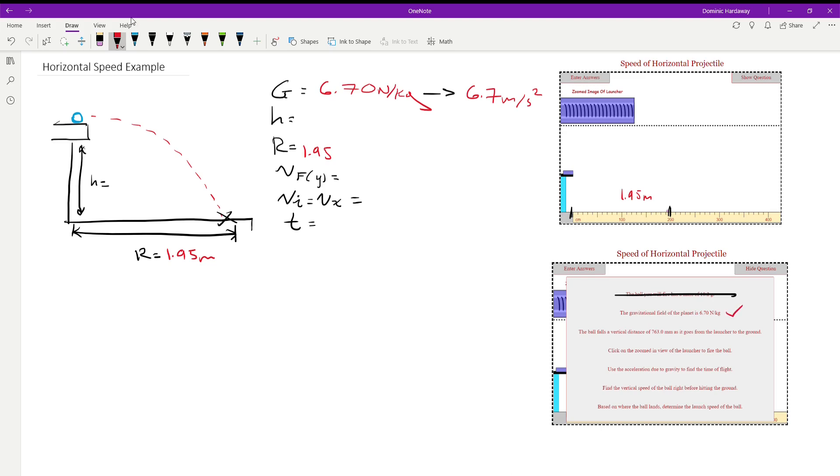So we have the gravity. The ball is going to fall vertical distance of 763 millimeters, and that's going to be 0.763 meters. So that's the height.